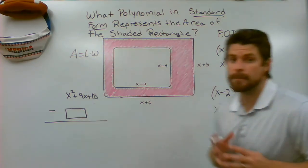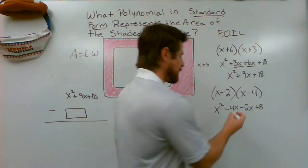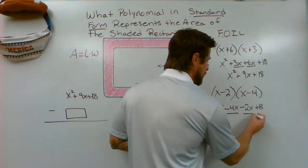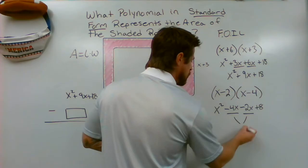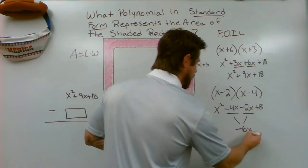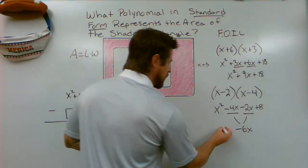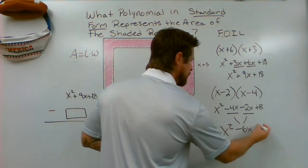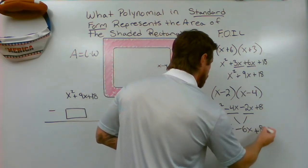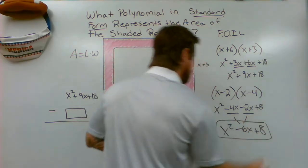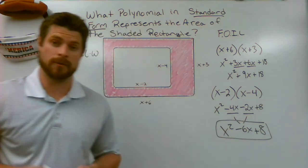So again, I need to combine my like terms. So my like terms here are negative 4X and negative 2X. Those are going to combine to negative 6X. Everything else gets brought straight down. And this is my area of the smaller rectangle.